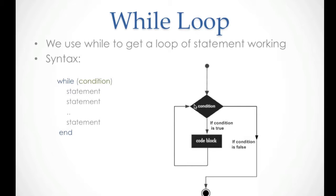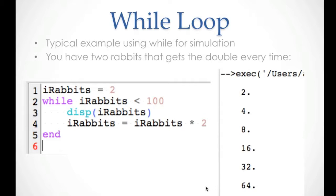If the condition is true, it gets into the loop and does everything that is inside. But if the condition is false, it gets out of the loop and finishes what is inside. We have to understand this carefully. Here you have an example — the simulation.